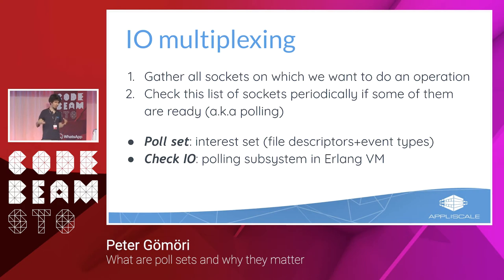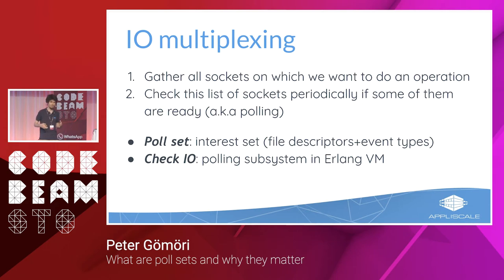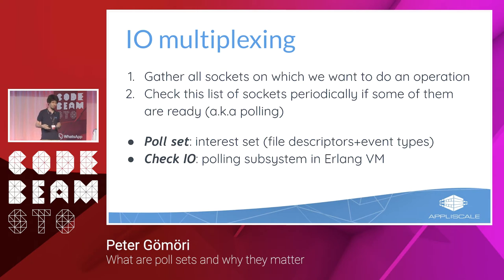You gather all your file descriptors that you want to operate on, then ask the operating system to check them and wait until some become ready. This set of file descriptors — each with the event type you're interested in — is called the poll set. Checking for readiness is also called polling. And check_io is the name of the subsystem that does this within the Erlang virtual machine.